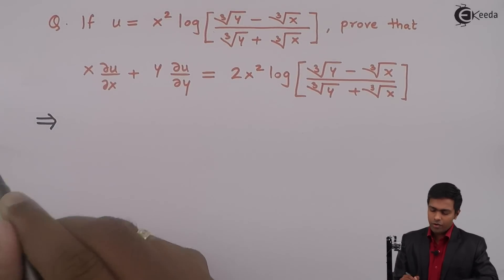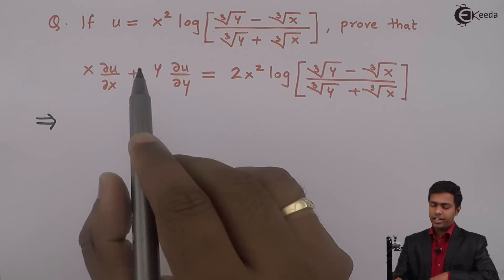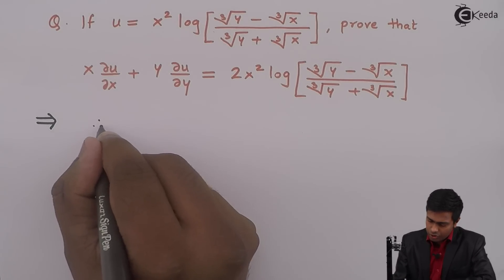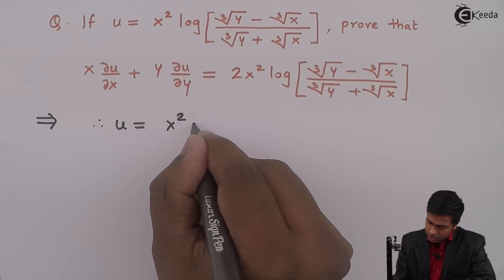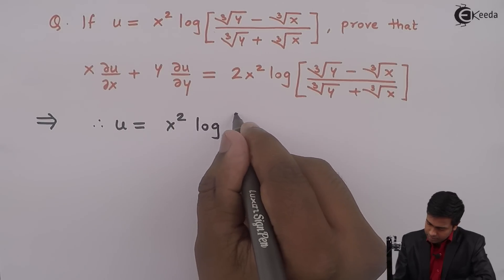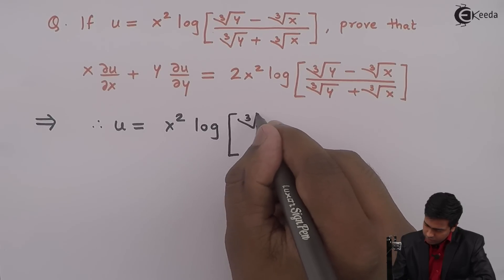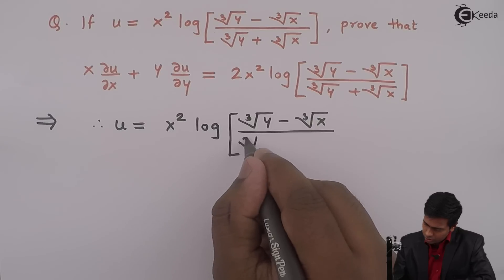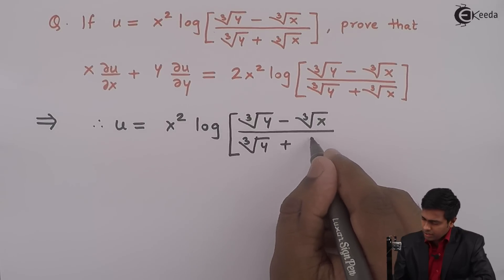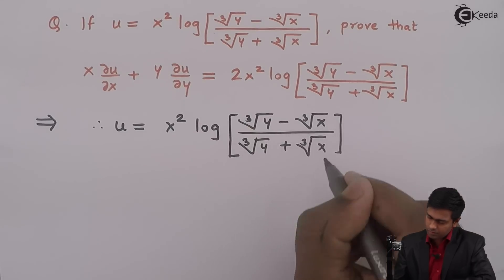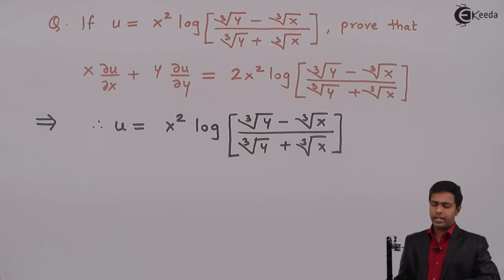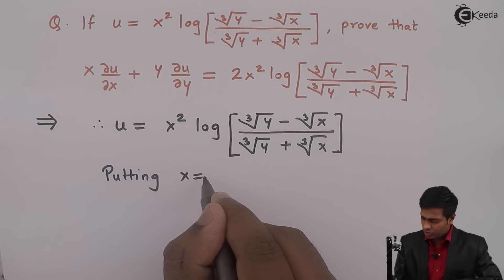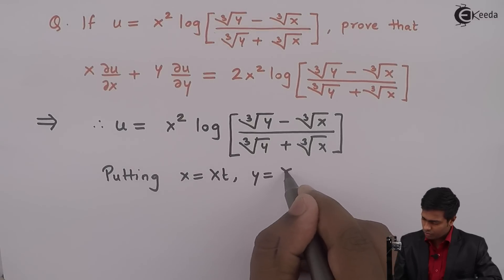So we will check whether the given function u is homogeneous or not. Therefore u is equal to x squared times log of (cube root of y minus cube root of x) divided by (cube root of y plus cube root of x). To check homogeneity, I will put x equal to xt and y equal to yt.